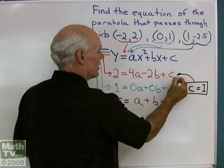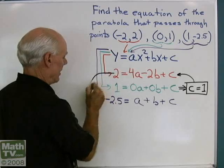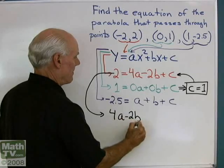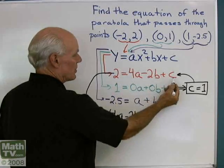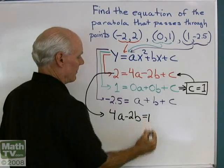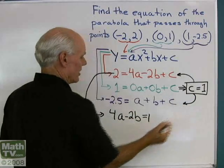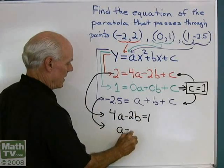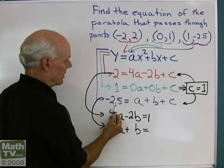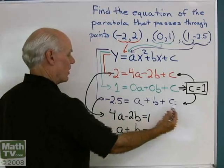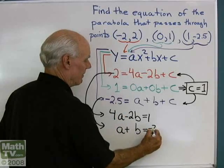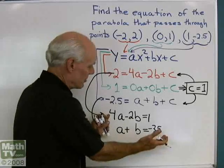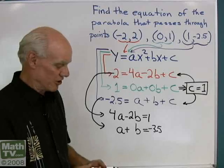Let me take c equal one and put it into the first equation. I'll write that equation as: 4a minus 2b is equal to two minus one, which is equal to one. Then I'll take c equal one and substitute it into the third equation. I get a plus b is equal to negative 2.5, and subtracting one from both sides gives negative 3.5. So now I've got it down to a system of two equations and two variables.